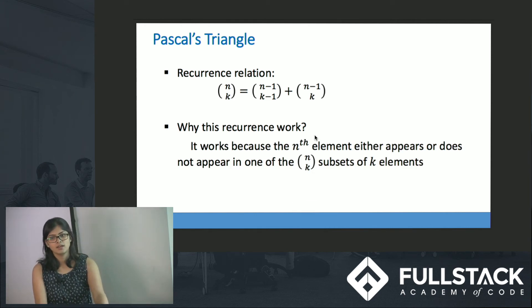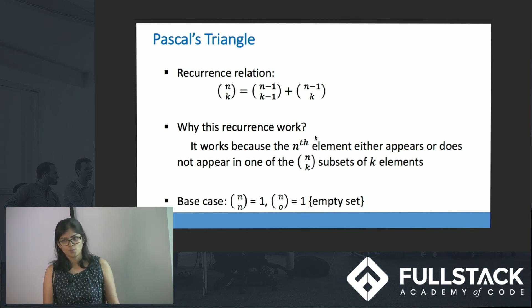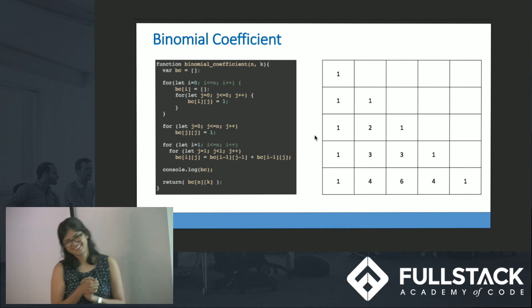Now we have a recurrence relation. What else do we need? We need the base case. What could be the base case? One of the base cases would be how many ways can I choose n students out of n students? There is only one way I can choose, that is I have to choose all of them. How many ways I have to choose 0 students out of n students? There is only one way which is empty set. I choose empty set, I choose nobody.